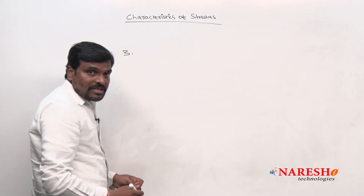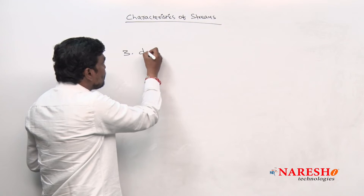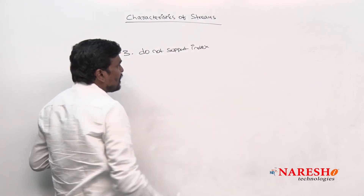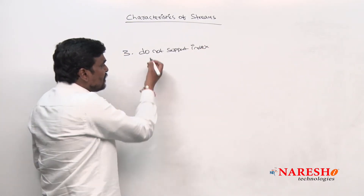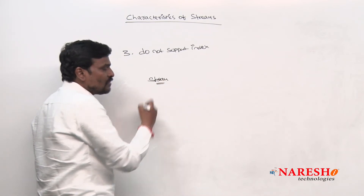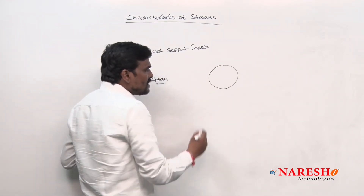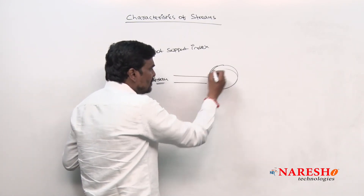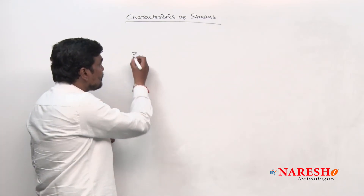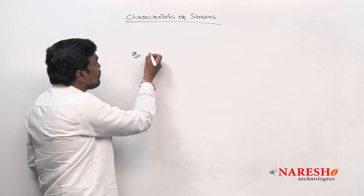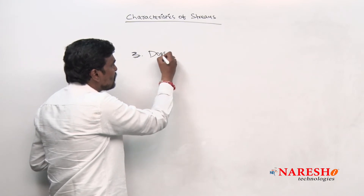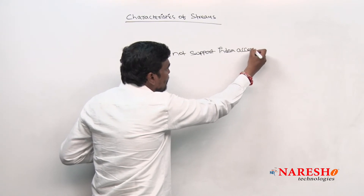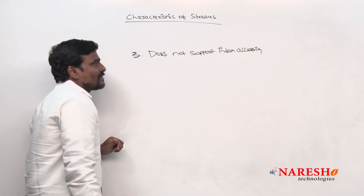The third characteristic of a stream is that it does not support indexed access. Stream is used to read the data from a collection in sequential order. Stream does not support index accessing.